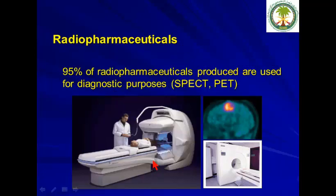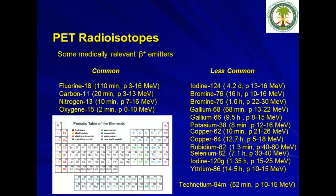It's worth mentioning that more than 95% of radiopharmaceuticals are produced or used for diagnostic purposes, and less than five percent are used for therapeutic purposes. Common PET radioisotopes include fluorine-18, carbon-11, nitrogen-13, and oxygen-15. Less common PET radioisotopes include iodine-124, bromine-77, all the way to technetium-94m.